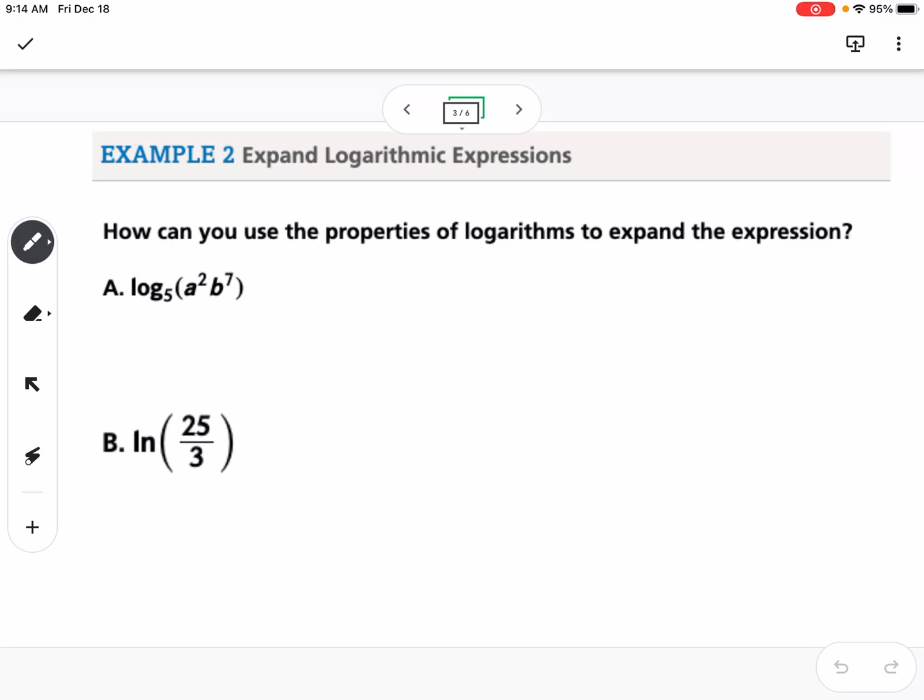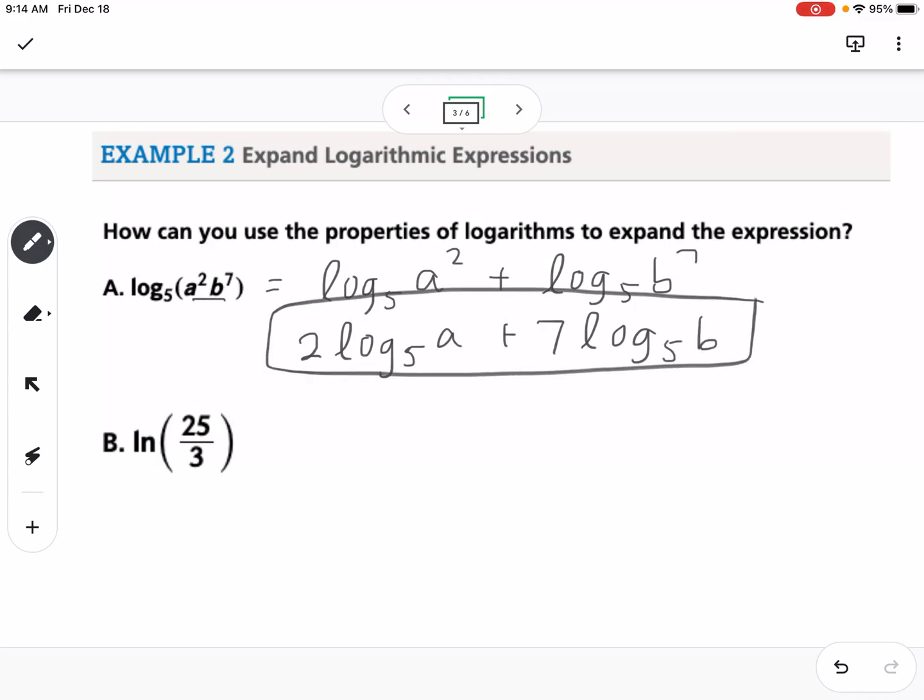So our first example, how can you use the properties of logs to expand? So we're expanding on this. You'll notice that the a and the b are being multiplied, so that's going to expand to addition. So this would be log base 5 of a squared plus log base 5 of b to the 7th. Then our final step would be to take the exponents and put them out front. So this would be 2 log base 5 of a plus 7 log base 5 of b. So that would be the expanded form of that log.